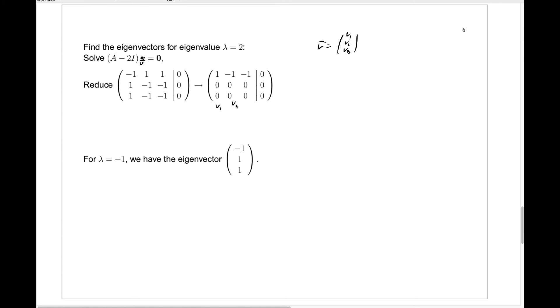and we think of v as the vector v1, v2, v3, then v1 is equal to v2 plus v3, so that our eigenvector v can take the form v2 plus v3, v2, and v3. That's putting in this v1 is v2 plus v3 up in here.